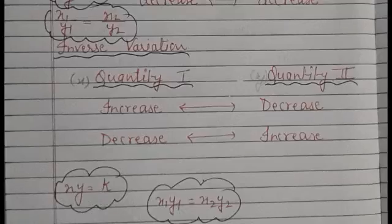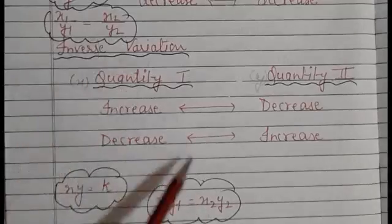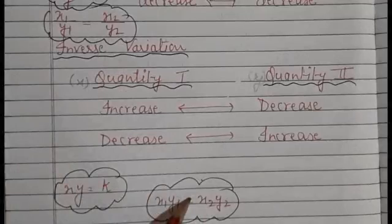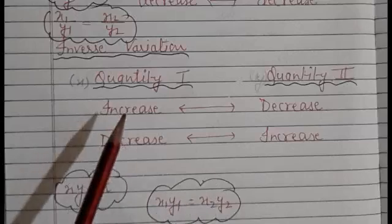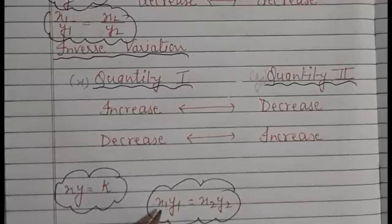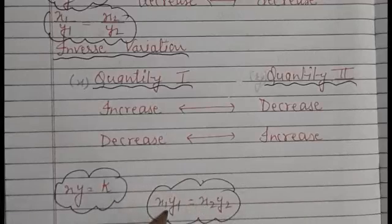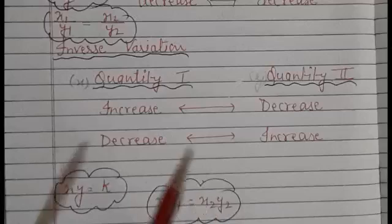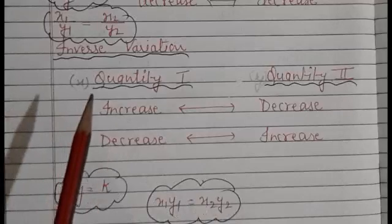So these two formulas we have to use in exercise 7C. First we have to recognize which type of variation it is, and according to that we apply the formula. We put in the values of x₁, y₁, x₂ and y₂ that are given, and then find the unknown variable.